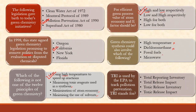Green chemistry synthesis could also involve which of the following? High temperature? No. Dichloromethane? No, it's poisonous. Fossil fuels? No, we're thinking of green concepts. Microwave? Yes — microwave is used as an energy-efficient technique. When microwave is used, the overall reaction time decreases, which helps because time is money. So microwave is the correct answer.